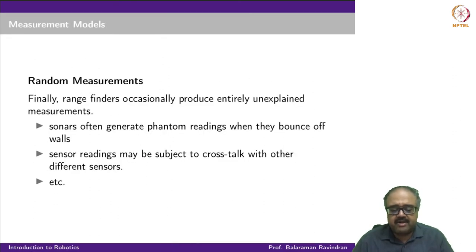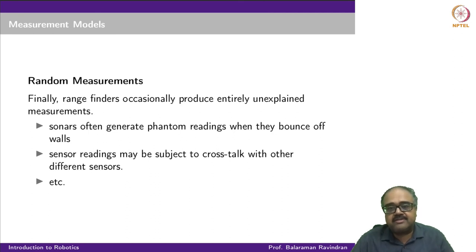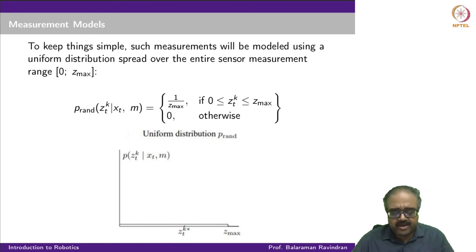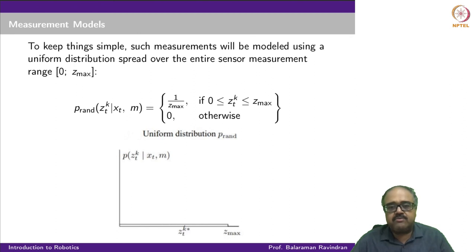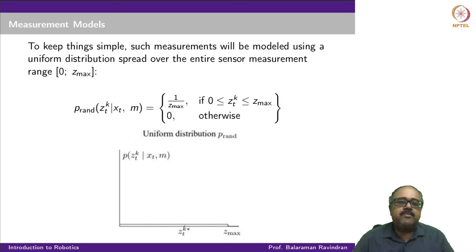The fourth and final error is random measurement noise — phantom readings from wall bounces, cross-talk, or sensor interference that places an object at some random location. We model this simply as a uniform distribution: the probability is 1 over z max for any value between 0 and z max. This gives us the distribution p rand. So we have four distributions: a Gaussian (p hit), an exponential (p short), an impulse (p max), and a uniform distribution (p rand).